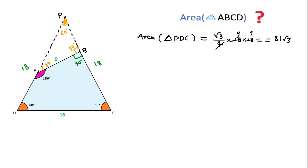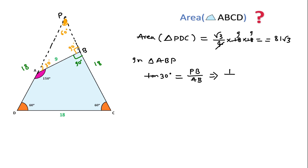To find the area of quadrilateral ABCD, I will first find the area of triangle PAB. Triangle PAB is a right-angle triangle because one angle is 90°. In triangle PAB, tan 30° = PA (perpendicular) over AB (base). Since tan 30° = 1/√3 and AB = 9 units, we get PA = 9/√3 = 3√3 units.